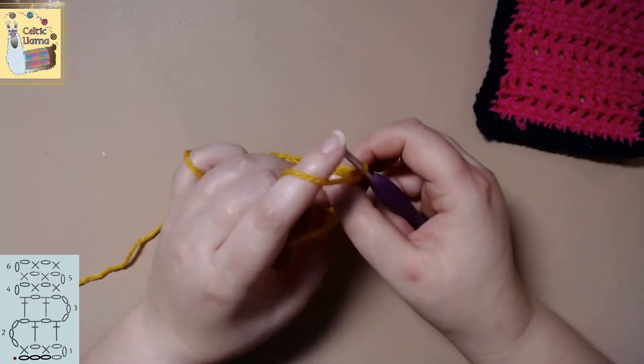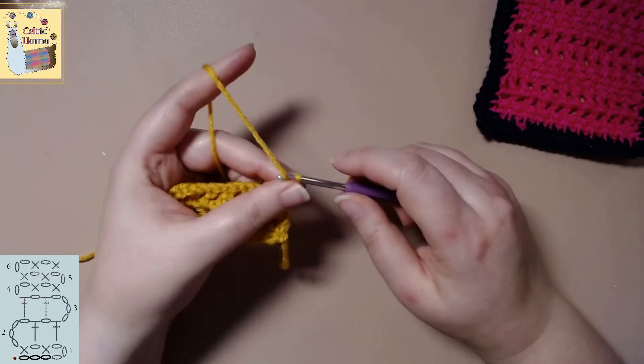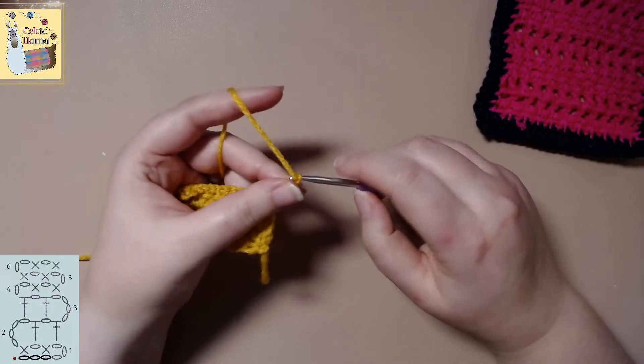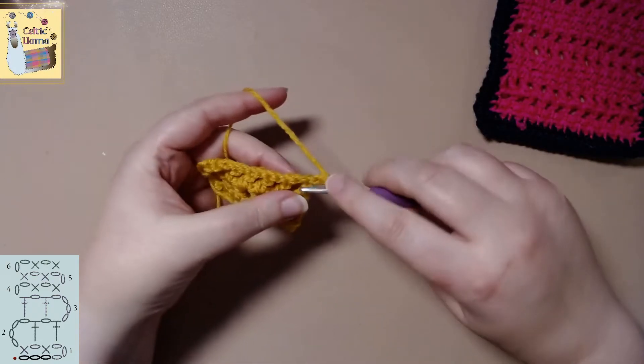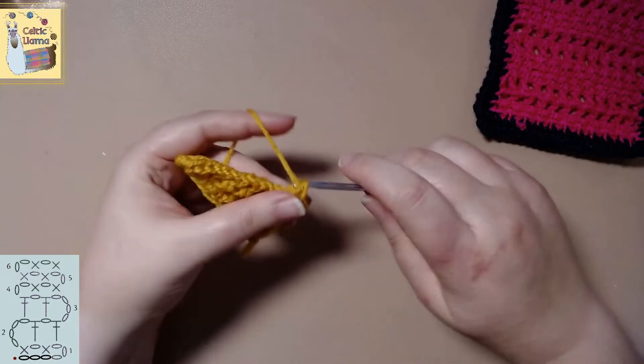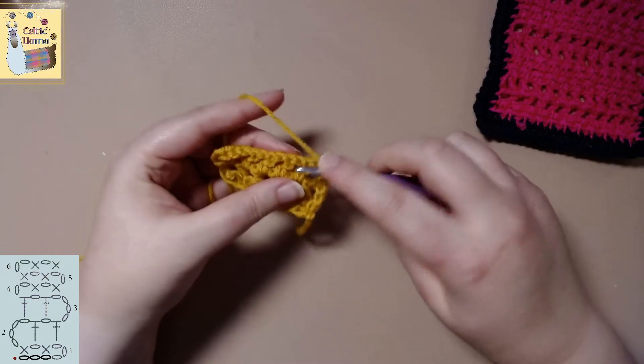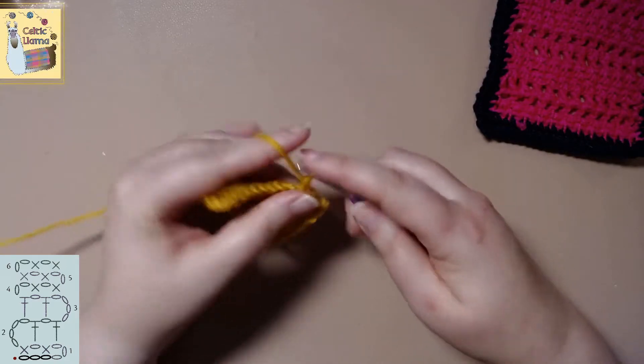All right. So let's go ahead and get started on row four. We're going to chain two. And we're going to single crochet into that chain one space. So we're pretty much repeating what we did on row one.